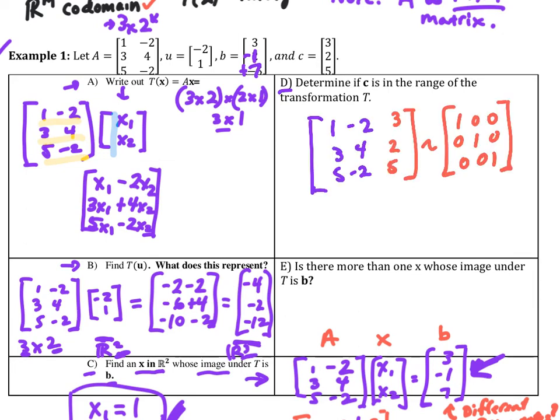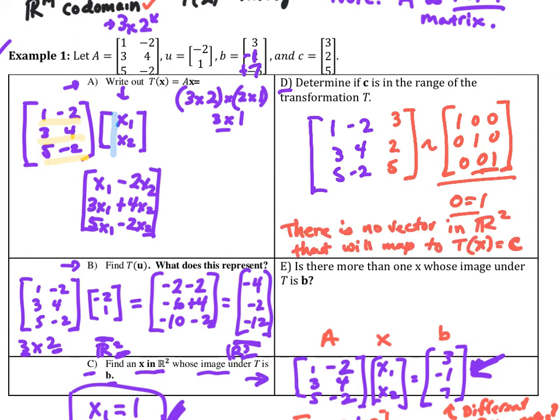Part D is very similar. Try it with C. If I do the same setup with the augmented matrix, I'm going to get this. Look at this row. 0 is equal to 1. So that means that there is not a C that is in the range for this transformation, T. So that means that there is no vector in R2 that will map to T of x is equal to C in R3.